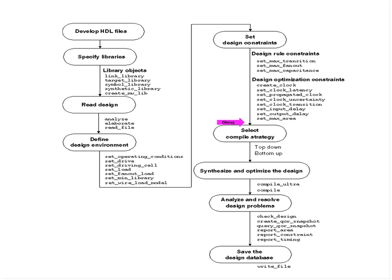There is a set_max_area constraint to set area goals. Before selecting the compile strategy, we have looked at how to specify the boundary conditions: first how to set the library, read the RTL, set the operating conditions, wire load model, and set design constraints. Before this point we have not actually performed any synthesis - we are just setting up the constraints and all the desired operating conditions before the synthesis even goes ahead.